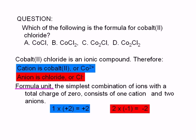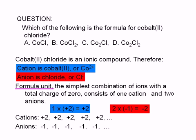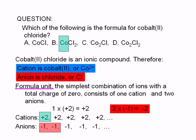Therefore, the formula should have subscripts that tell us this. In one formula unit, there is 1 cation and 2 anions.